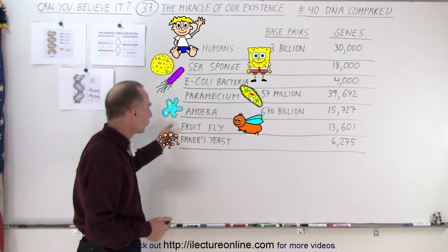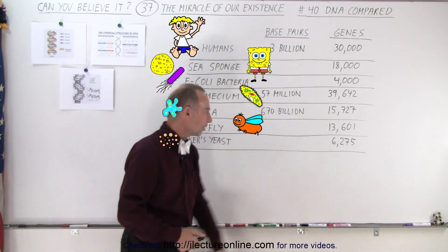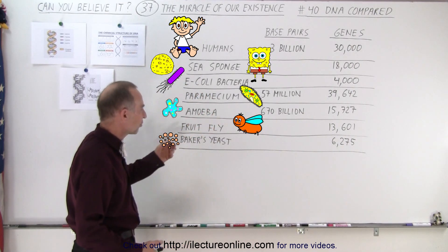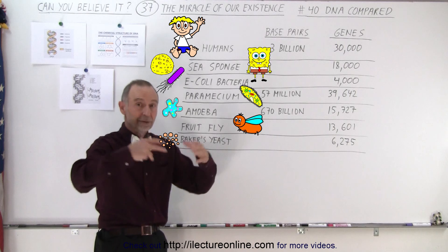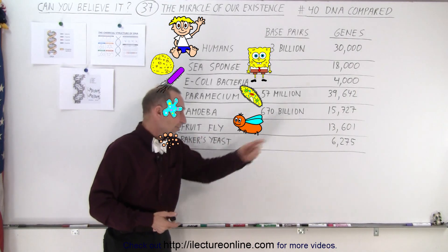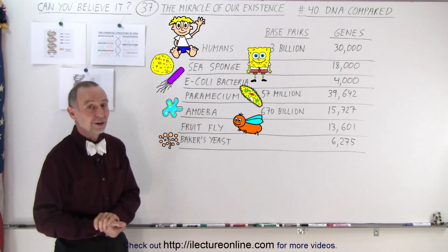Let's take a look at the fruit fly. It has 13,600 genes. And baker's yeast — the stuff you use to fluff up your bread — well, that has 6,275 genes.